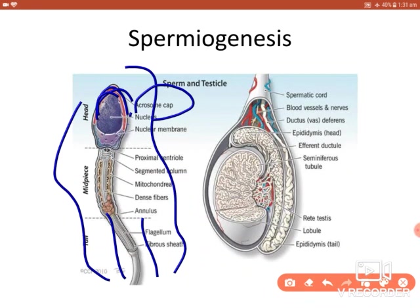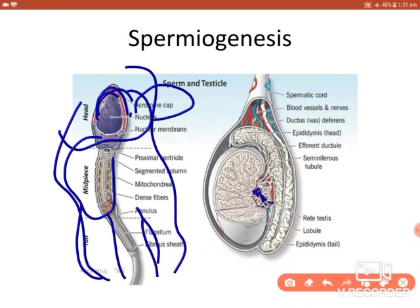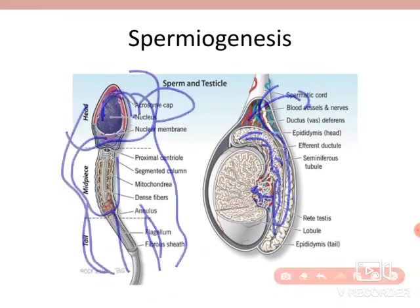Then there is the tail phase, where centrioles in the spermatids elongate to form the tail. Finally, there is the maturation phase, where the spermatids lose excess cytoplasm and form the mature sperm consisting of the head, the middle piece, and the tail. The spermatozoa in the lumen of the seminiferous tubule then enter the epididymis, where motility occurs, before going to the vas deferens.